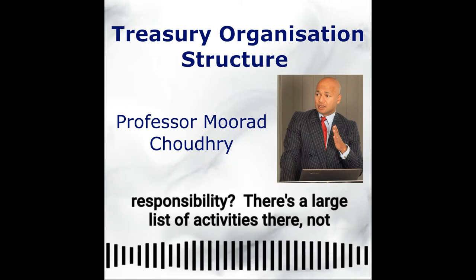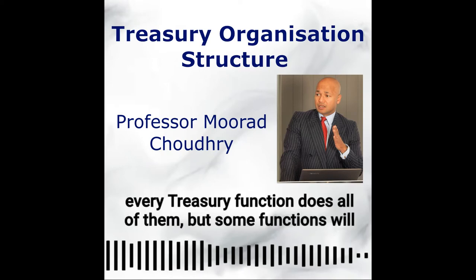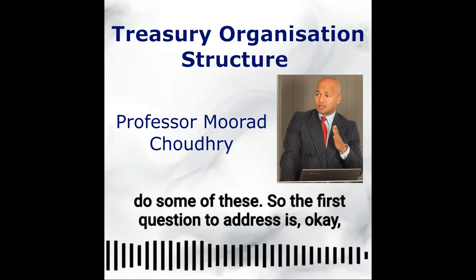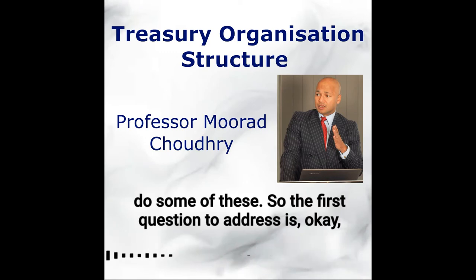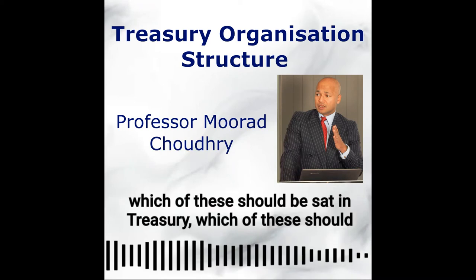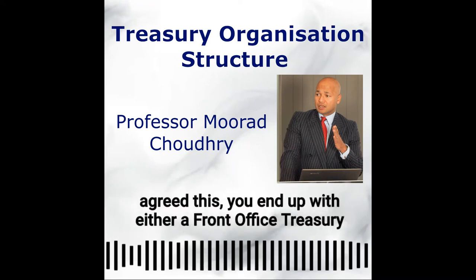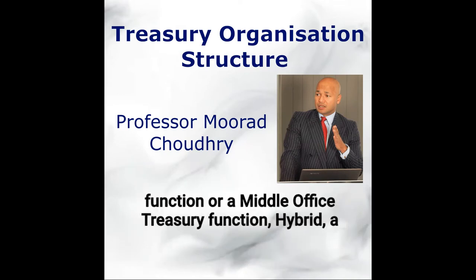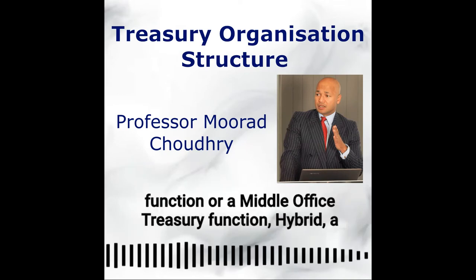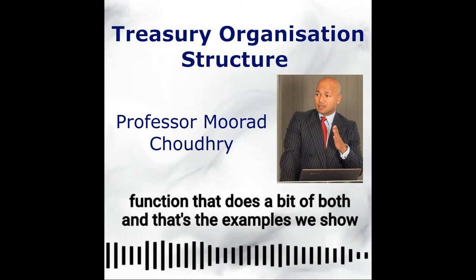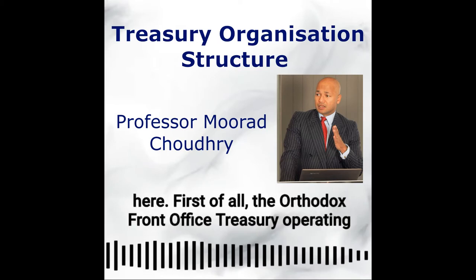There's a large list of activities there. Not every treasury function does all of them, but some functions will do some of these. So the first question to address is: which of these should sit in treasury, and which should sit elsewhere in other parts of the bank? Once you've agreed this, you end up with either a front office treasury function, a middle office treasury function, or a hybrid — a function that does a bit of both. And those are the examples we show here.